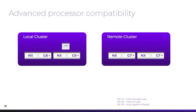In a cluster we might have nodes of two different generations. In this example we have NXG8 and NXG9 nodes which correspond to Intel's Ice Lake and Sapphire Rapids processor generations.